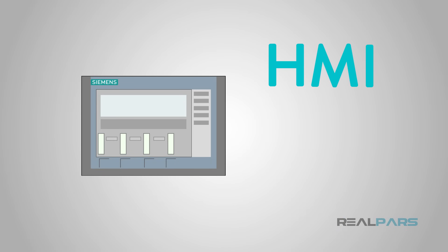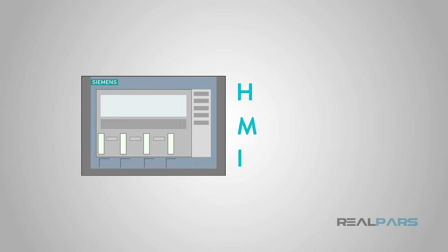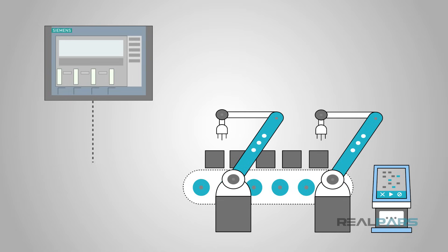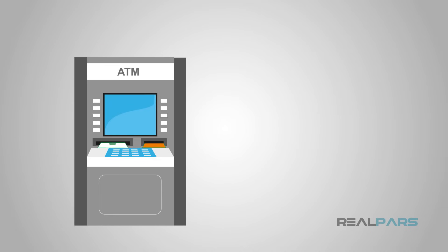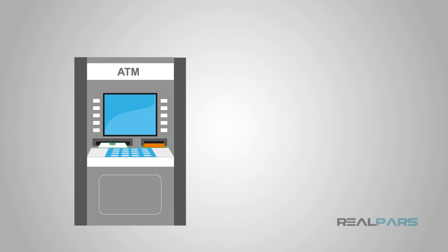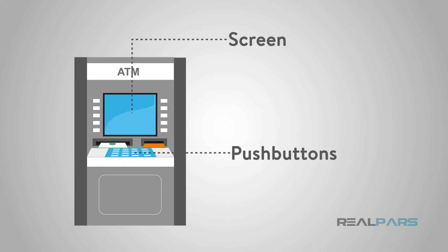Maybe you've never heard of an HMI, but I'll bet you encounter them pretty regularly. HMI is short for Human-Machine Interface. We use HMIs in industry to control and monitor machines. A very common HMI that you all encounter on a regular basis would be an ATM machine. The screen and push buttons allow you to operate the machine to dispense or deposit money.